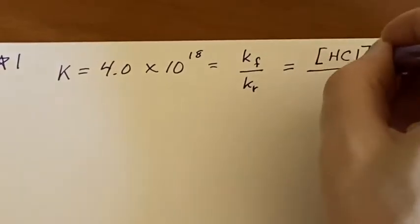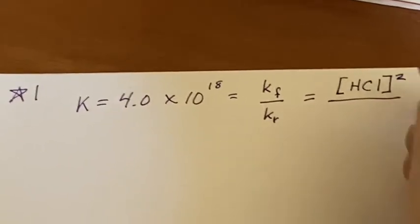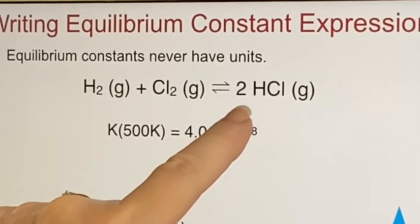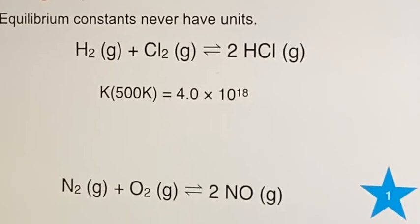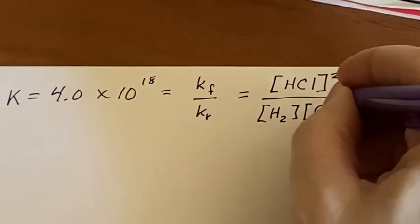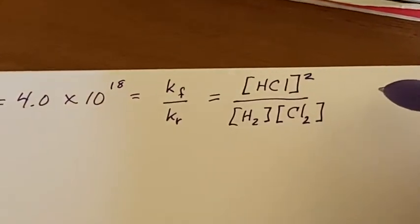Then I see that the products are here on top. The HCl is on top. The concentration is squared to match the coefficient here in the equation. And then the reactants, the hydrogen and the chlorine gases are down here. So this is what that K means.